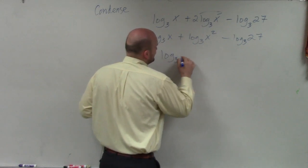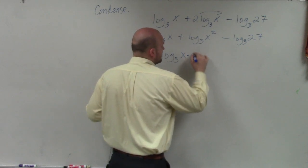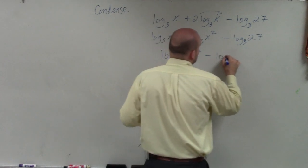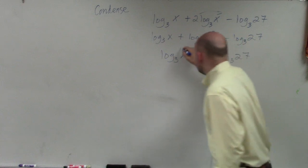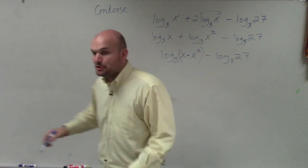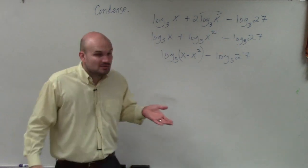So that would be log base 3 of x times x squared minus log base 3 of 27. Now, ladies and gentlemen, if you have x times x squared, going back to the rules of exponent, that equals what?